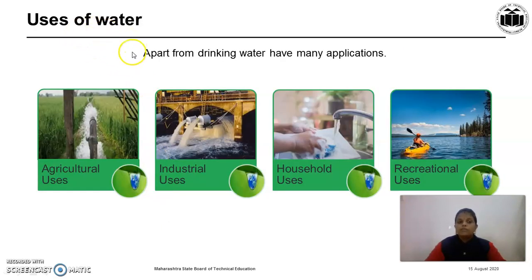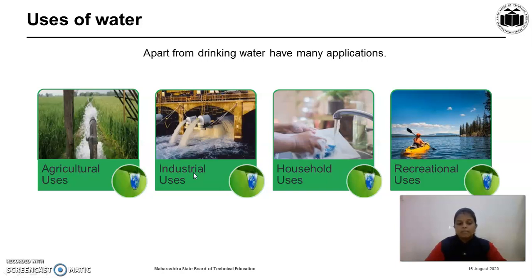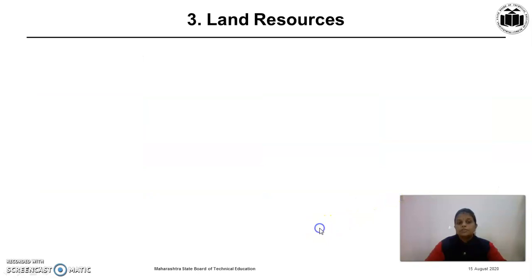What are the uses of water? Apart from drinking, water has many applications. Agricultural uses: in agriculture, it is used for irrigation, meaning watering the plants. Industrial uses: in different industries, water is used as a solvent, cooling agent, heating agent, and many more. Household uses: at home, we use water for cleaning, washing, bathing, making food, etc. Recreational uses: we enjoy water parks, and that use is called recreational use.